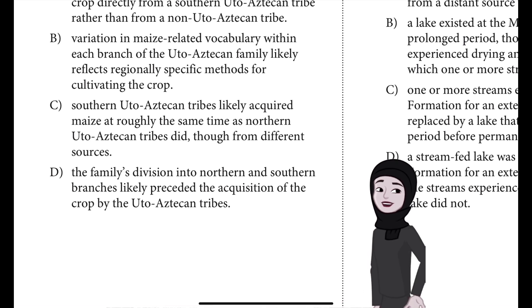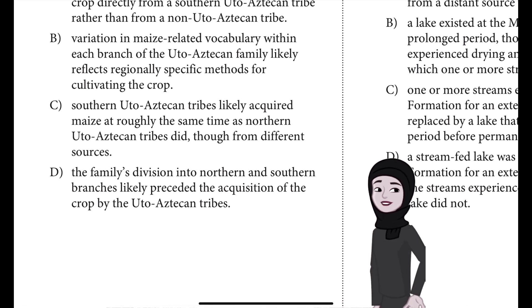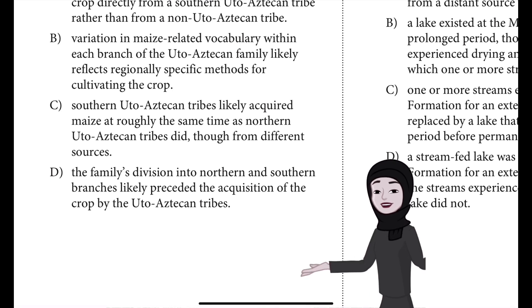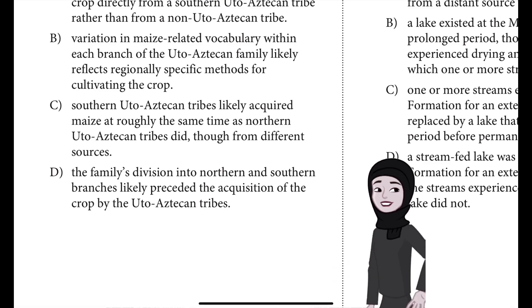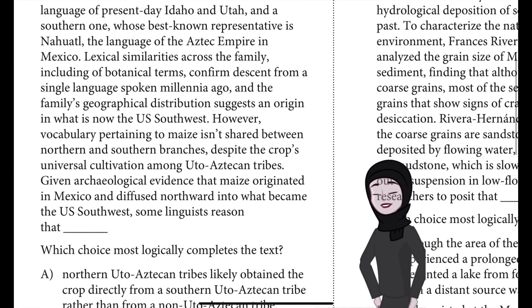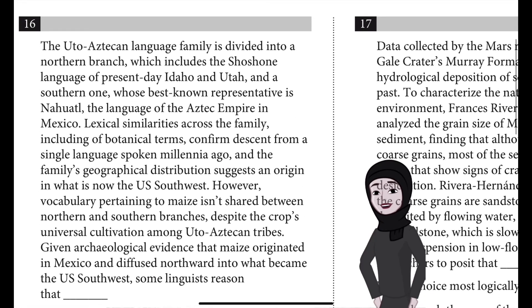C: Southern Uto-Aztecan tribes likely acquired maize at roughly the same time as northern Uto-Aztecan tribes did, though from different sources. Or D: The family's division into northern and southern branches likely preceded the acquisition of the crop by the Uto-Aztecan tribes.